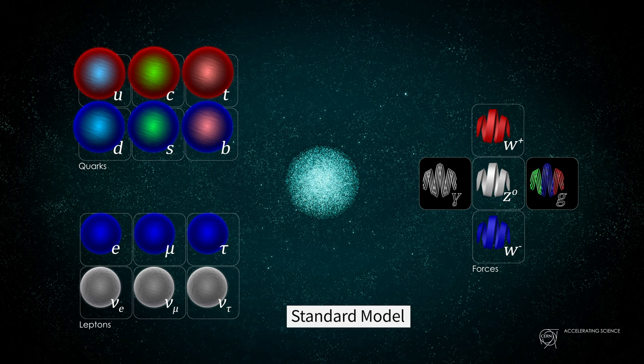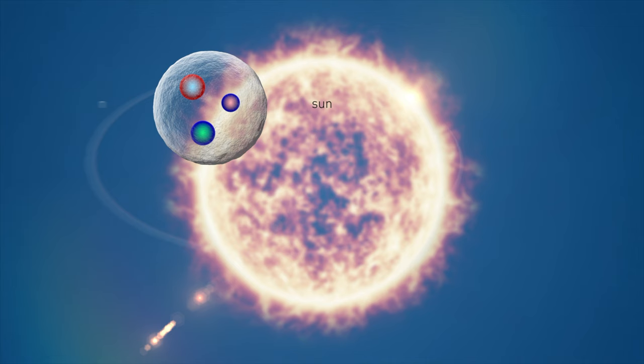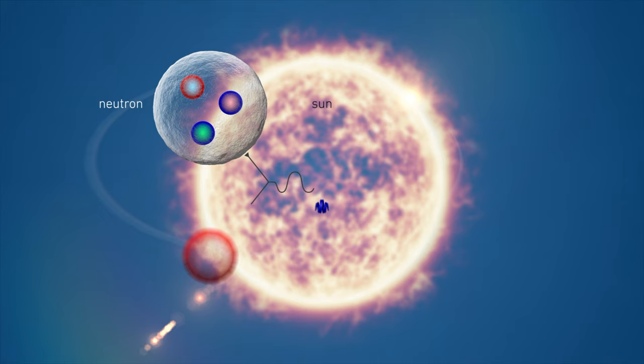W boson is a fundamental parameter of the standard model, and as such, if we measure something that slightly differs with respect to what the standard model predicts, this will be a hint of new physics.